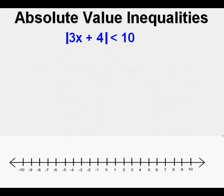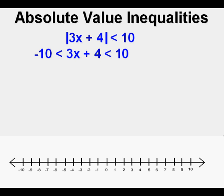Now let's look at this one. The absolute value of 3x plus 4 is less than 10. Is this one more, or is it less? It's less, so we should remember that less is NEST. For less is NEST, we start with the negative of the number on the right, which is negative 10. Then we place is less than 3x plus 4, and we finish with is less than 10.